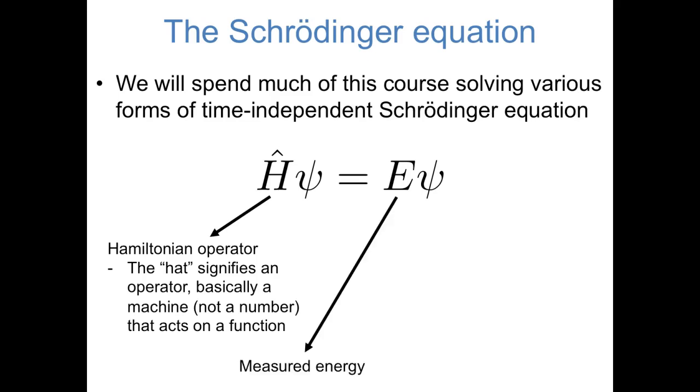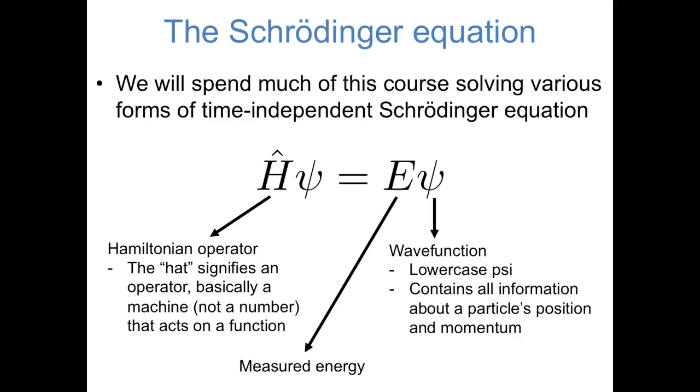The capital E is just a number. It's the energy that you would measure if you took an energy measurement on an object. And this symbol psi really gets at the heart of quantum mechanics. Psi represents what's called the wave function.